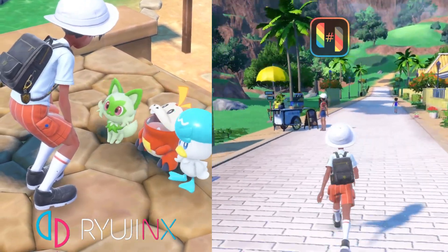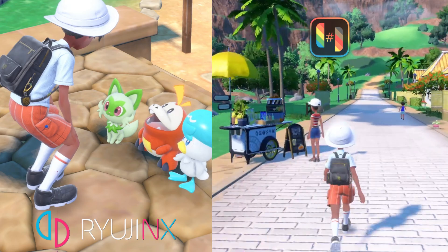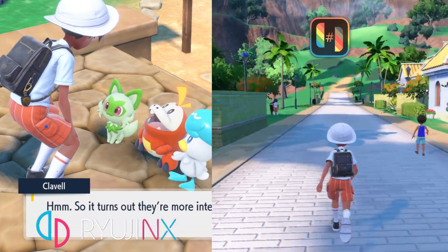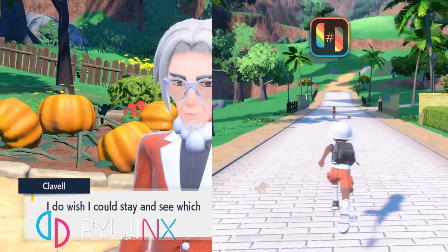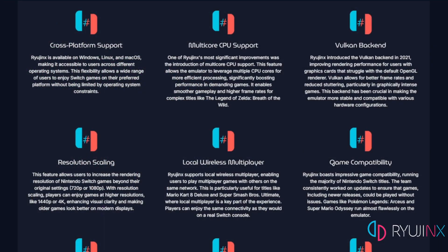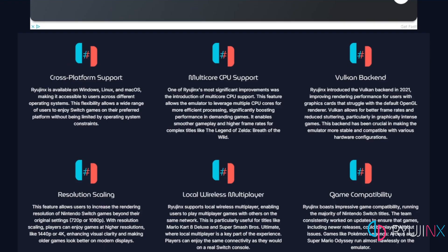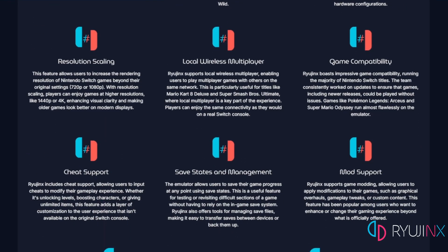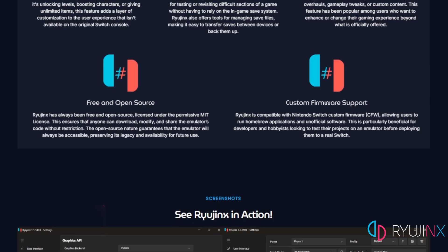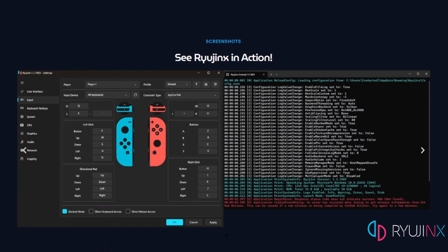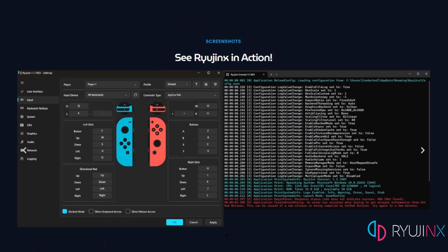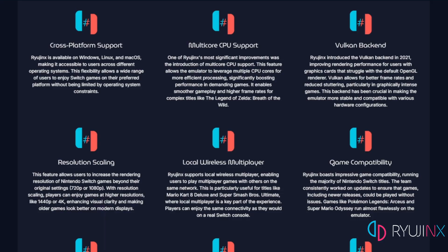First, let's talk about Ryujinx, one of the most well-known and reliable Nintendo Switch emulators out there. Ryujinx is open source and well-known for its accuracy, stability, and broad compatibility with Switch titles. It runs on Windows, Linux, and even Mac, and it's a favorite for gamers who want the near-console experience on PC.